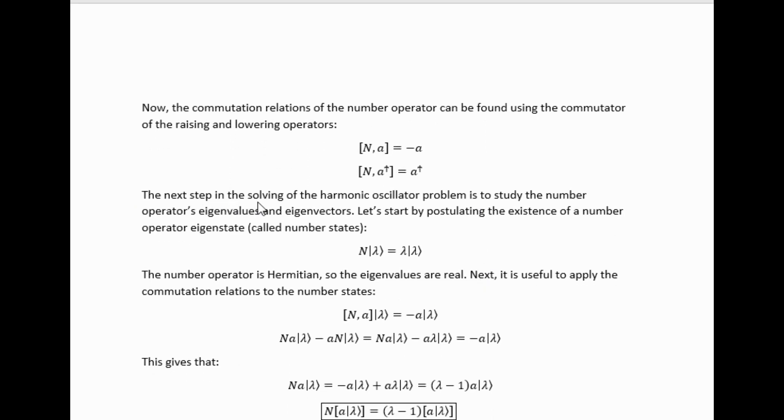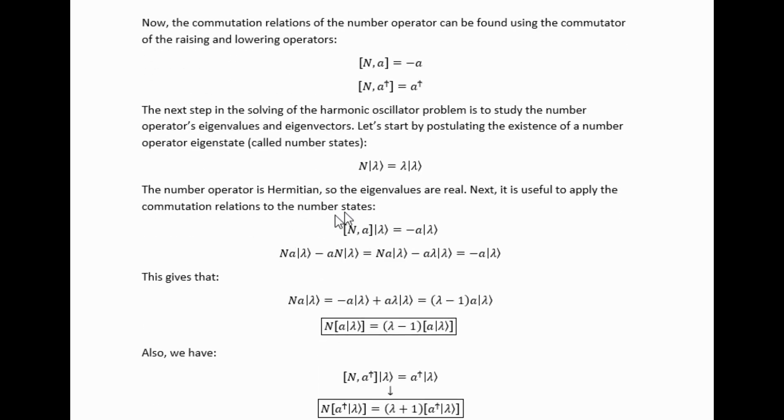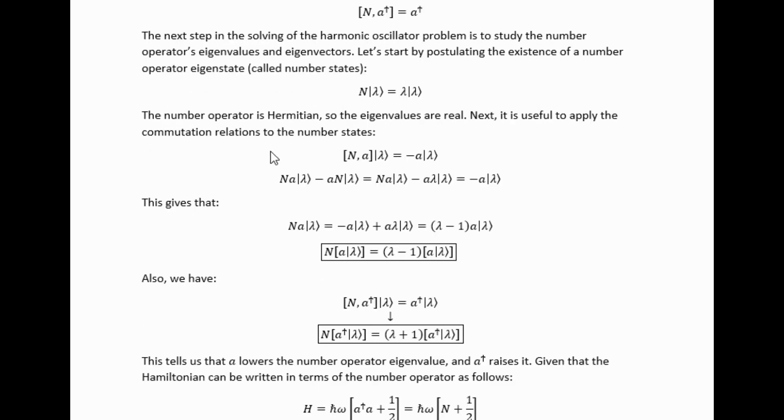The next step in solving the harmonic oscillator problem is to study the number operator's eigenvalues and eigenvectors. Let's start by postulating the existence of a number operator eigenstate called a number state. If we take this number state and act on it with the commutators that we've evaluated up here, involving the A operators and N, we find the following effect that the A operators have on the number state and this effect from their Hermitian conjugates.